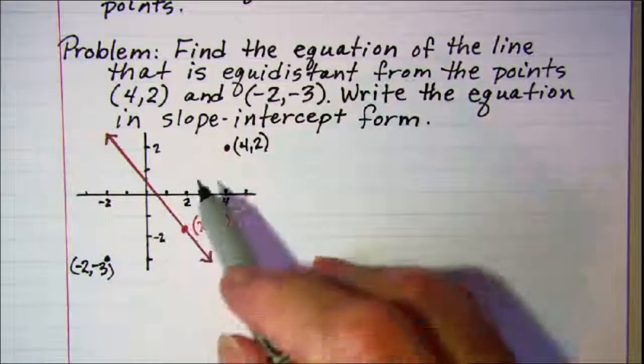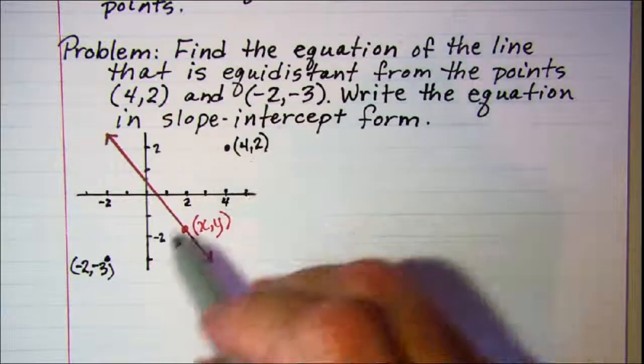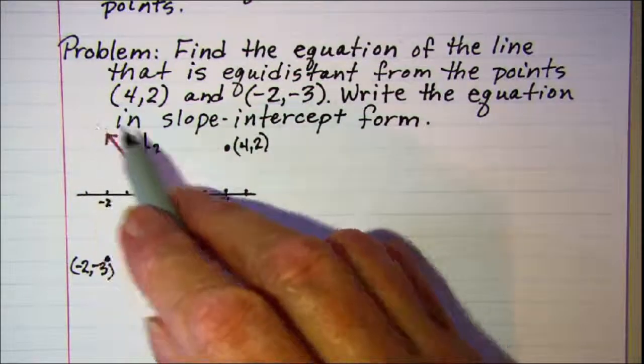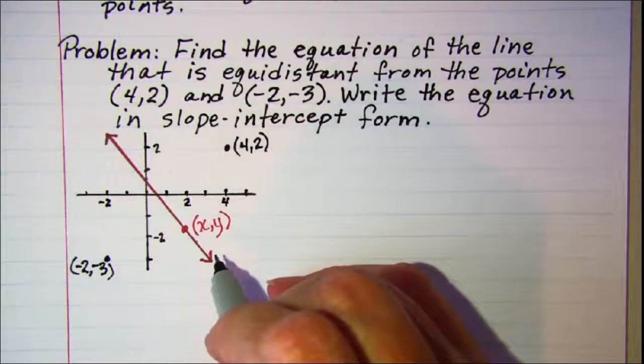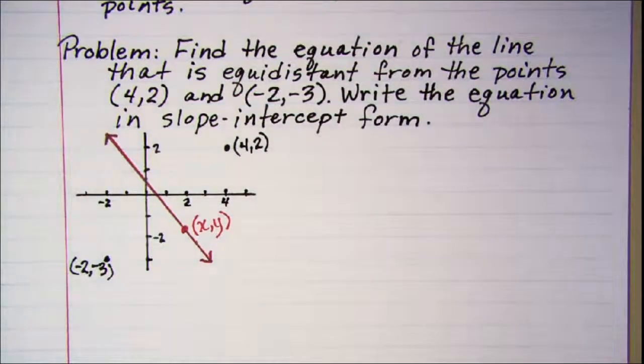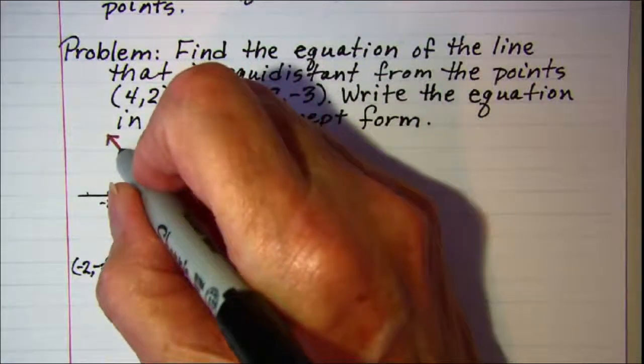And so the line that's equidistant from those two points would be this line that lies pretty much right here. This is just a sketch so it's not real accurate. But when we say equidistant we're talking about any point on this line.